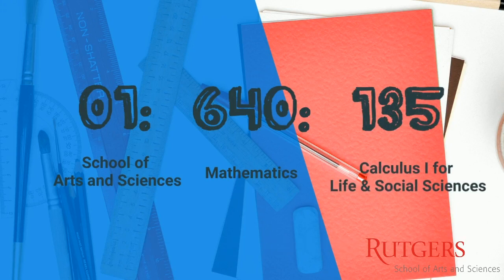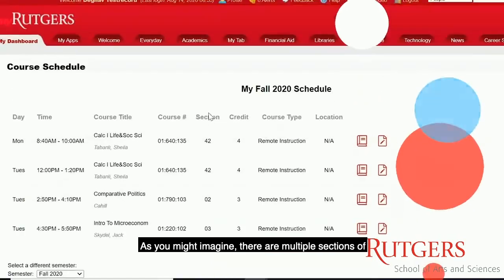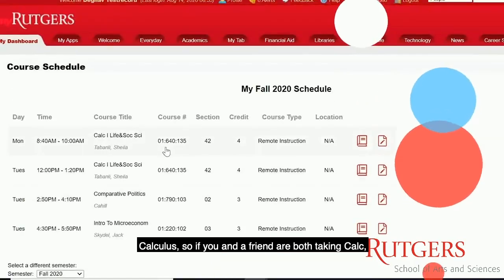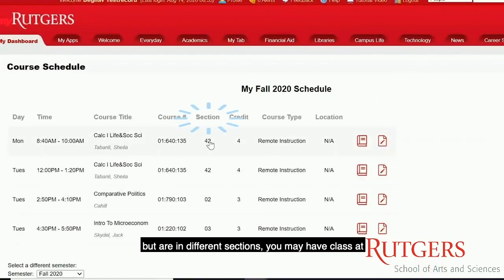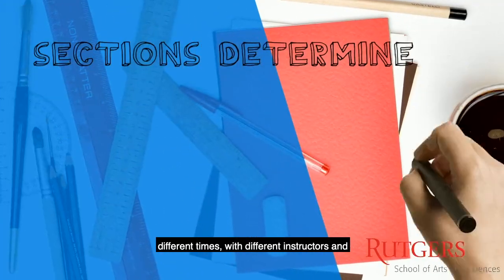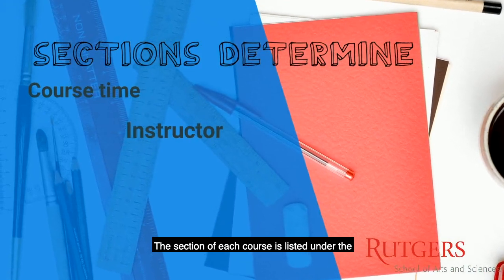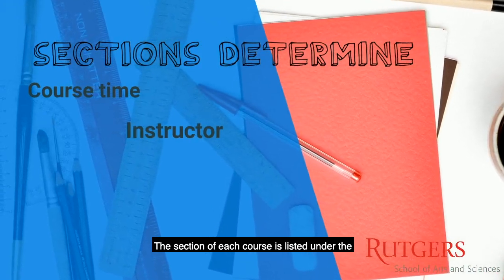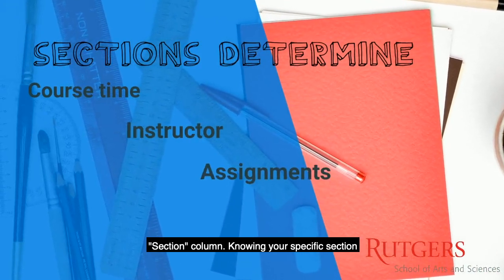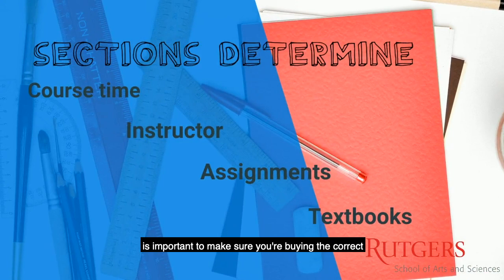As you might imagine, there are multiple sections of Calculus, so if you and a friend are both taking Calc but are in different sections, you may have classes at different times with different instructors and have different assignments. The section of each course is listed under the section column. Knowing your specific section is important to make sure you're buying the correct textbooks or for contacting your instructor.